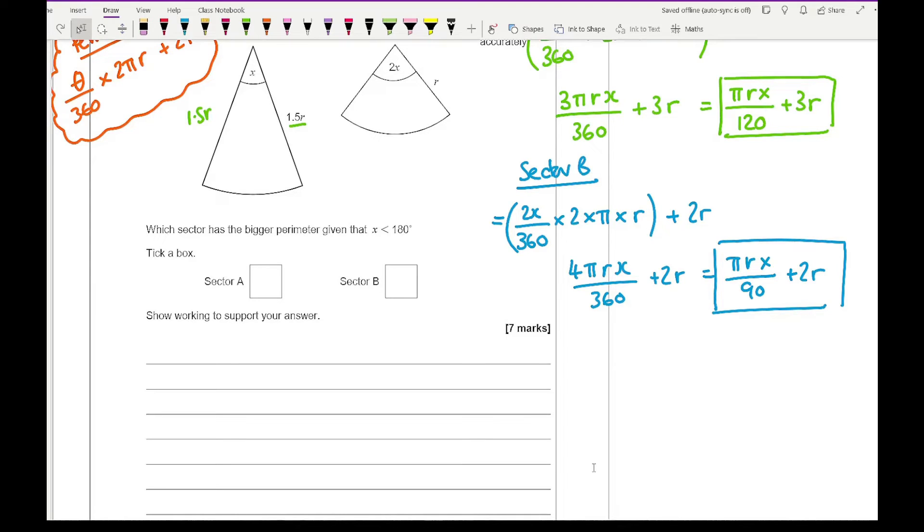You might think, if I substitute values of r, make up a value, then I can work out what the angles and perimeter are going to be. That's actually a good tactic, however what you might want to do is prove this algebraically.